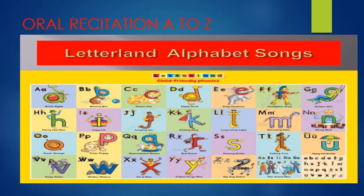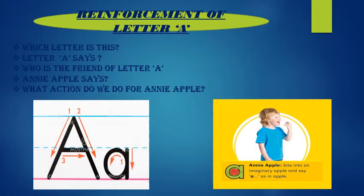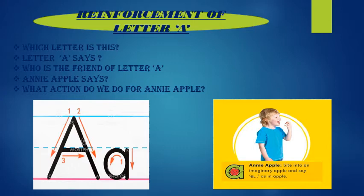Now children, let's see what is our first letter for today. Can you tell which letter is written here? Yes, this is letter A. And what does letter A say? Letter A says 'a'. And who is the friend of letter A? Like all of us, letter A also has a friend. The friend of letter A is Annie the apple. And what action do we need to do for Annie apple? We have to bite into an imaginary apple and say 'a'.